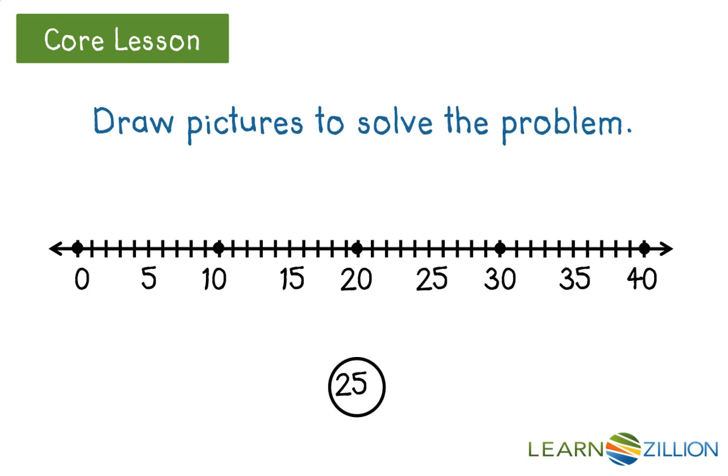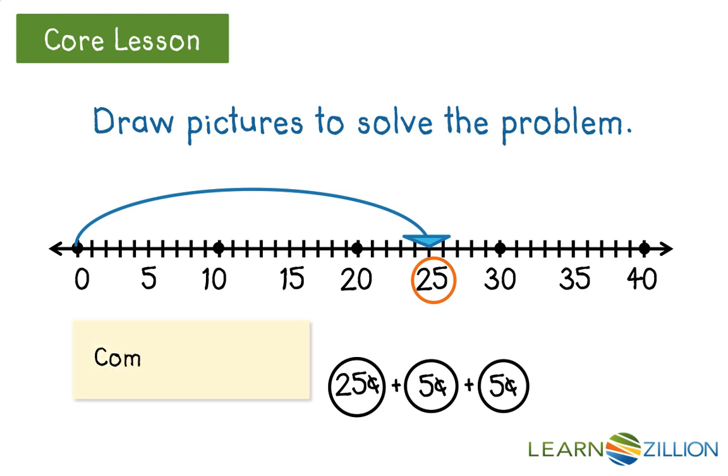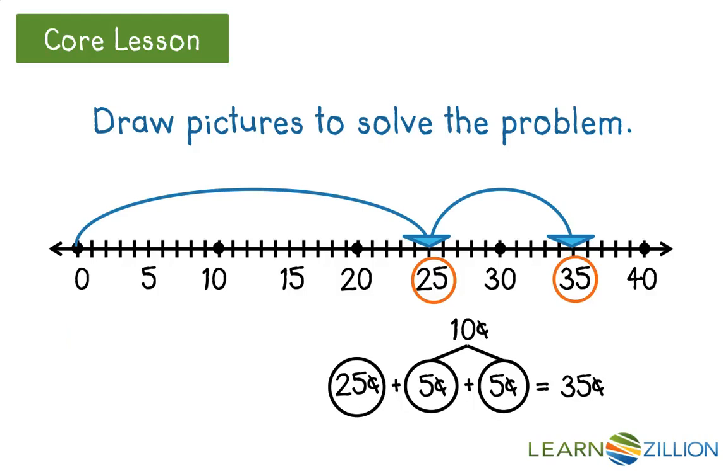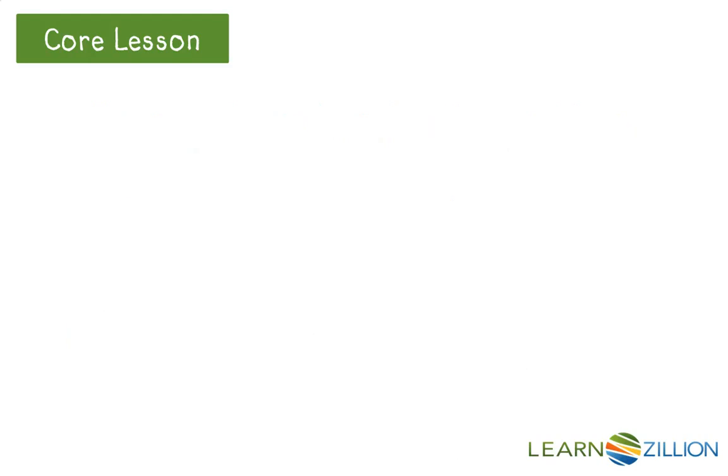Draw pictures to solve the problem. We can do it another way as well. There's our 25 cents to begin. Sometimes it's easier to combine some coins to make it much easier. So we'll combine those two 5 cents and make a dime. So we can just skip count by 10. 25 cents skip count by 10 is 35 cents. All we had to do was change the number in the tens place from 2 to 3 to get 35 cents. He found 35 cents.